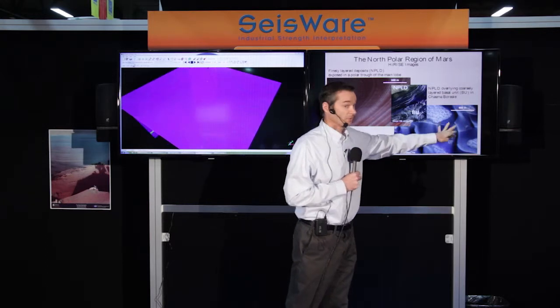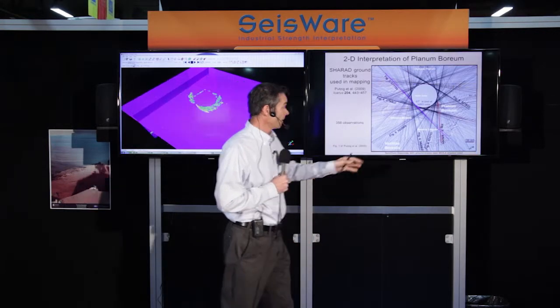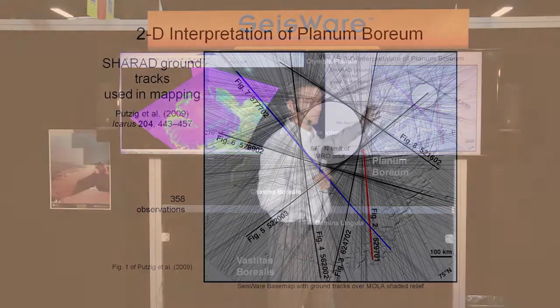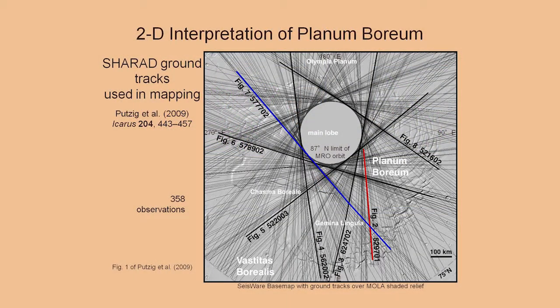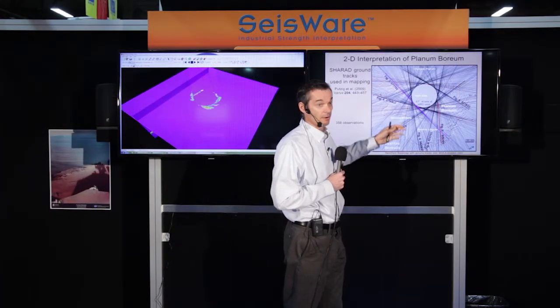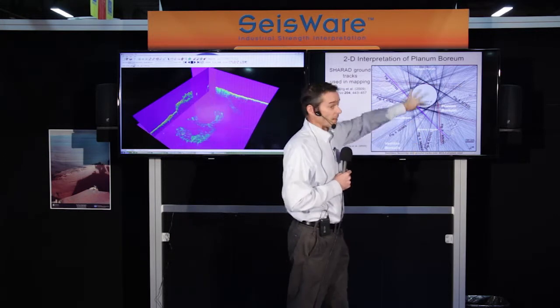And this is what those dunes look like — they're quite large sand dunes. Here is another view of the polar region with a shaded relief map in the background and an overlay of the orbit tracks of the spacecraft from which we obtain the radargrams. It's like a big 2D survey of radargrams in a spiral pattern.